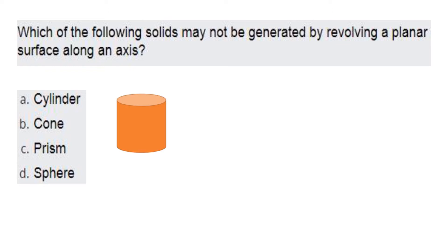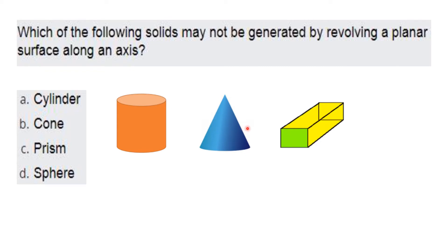We are going to see the cylinder — revolving around a particular axis. A revolving planar surface generates a cylinder. In the same way, we have a central axis — that is the planar surface. That gives us the cone.